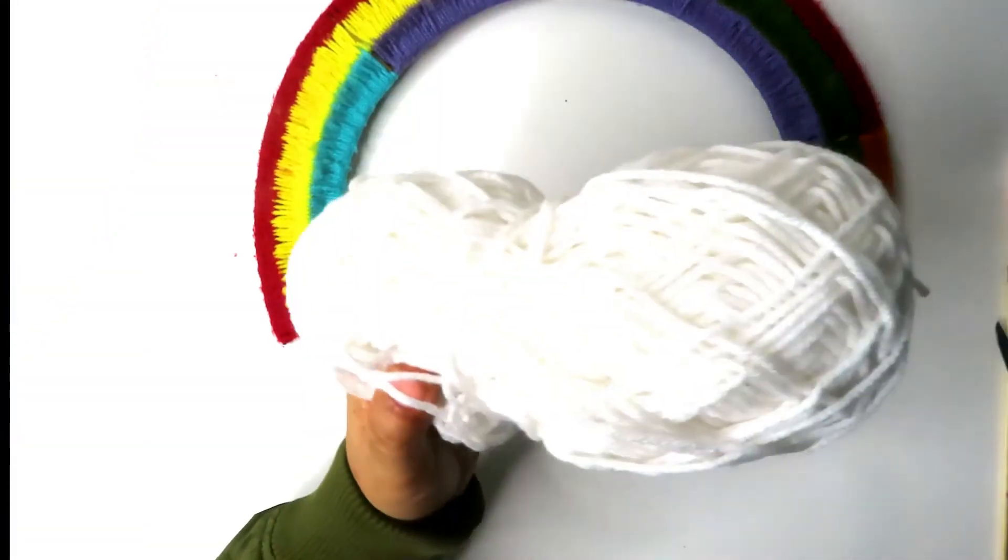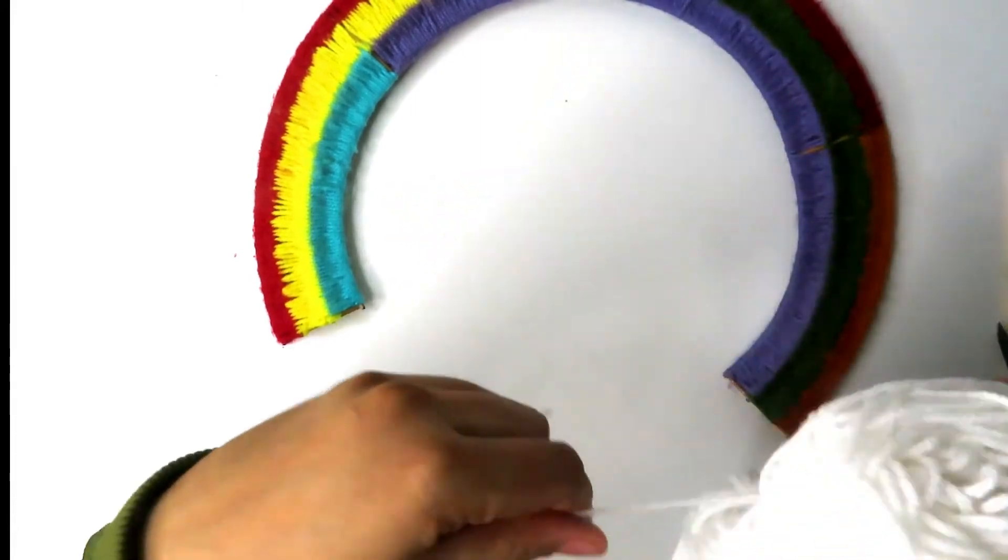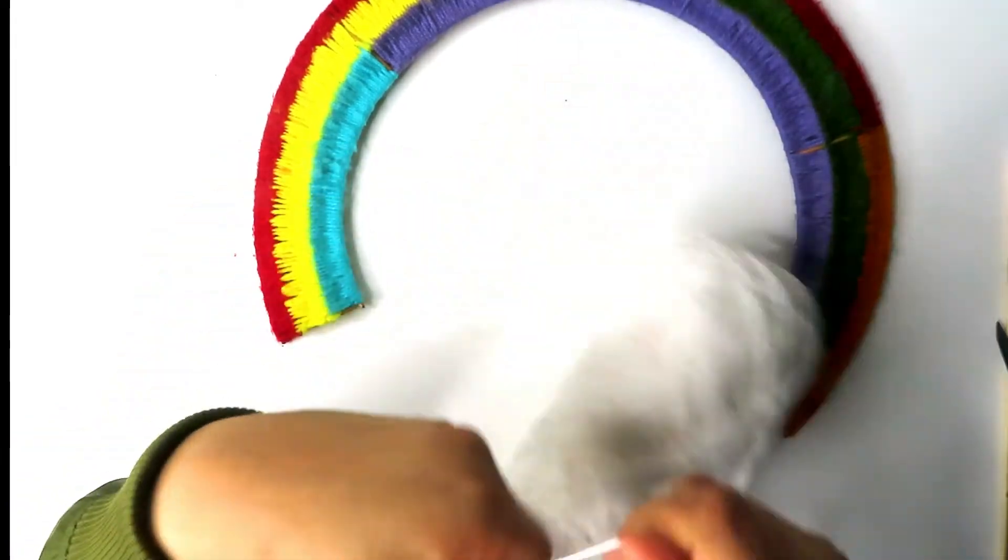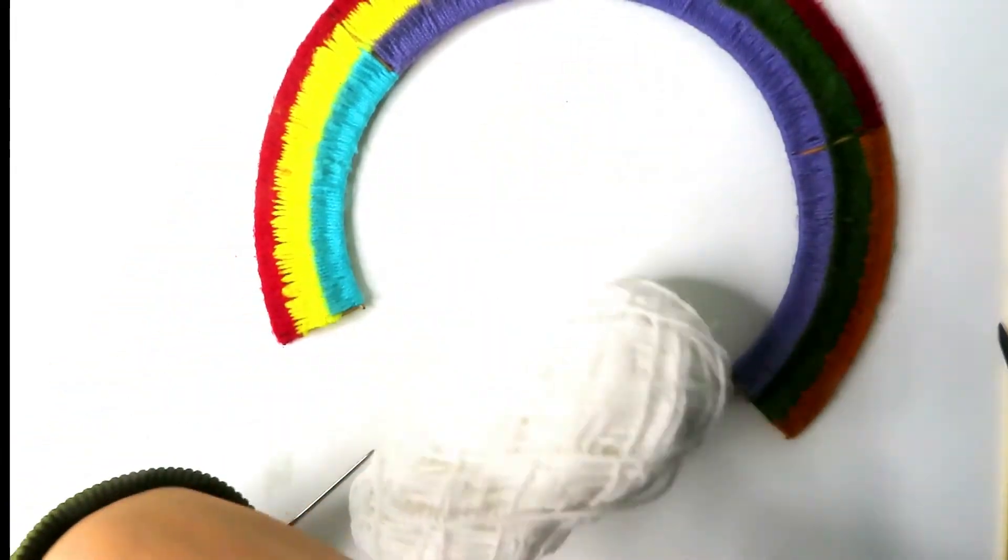Now we're going to use our white yarn to create the clouds. We're going to make ten separate pom-poms for our clouds and five pom-poms will go on each side of the rainbow.